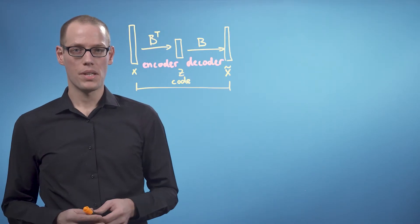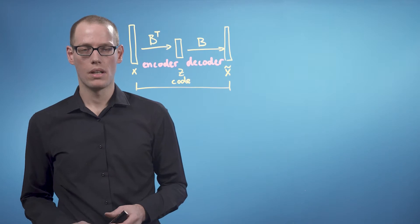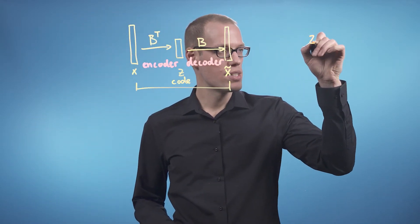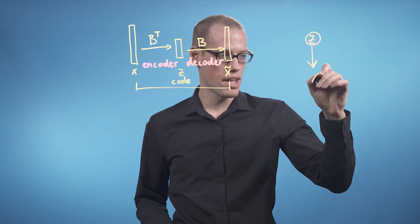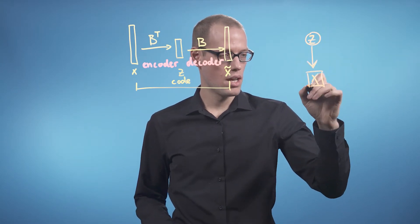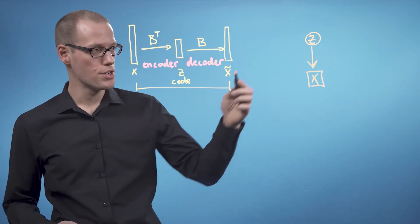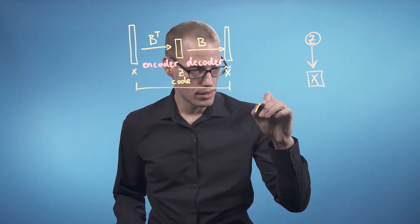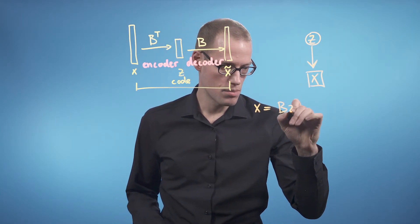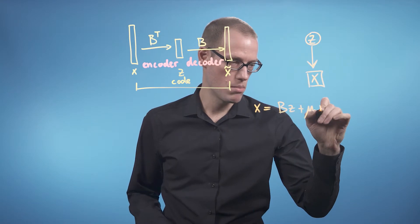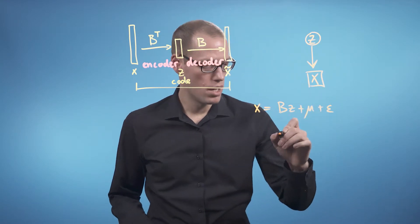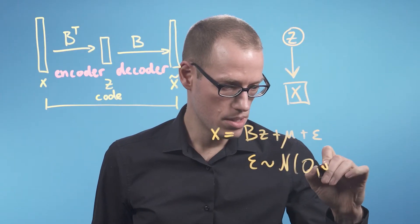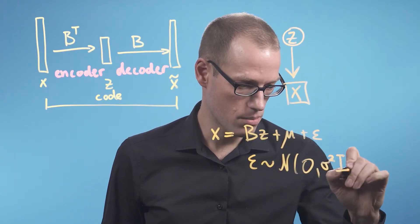We can also look at PCA from the perspective of a latent variable model. We assume that an unknown lower dimensional code Z generates data X, and we assume that we have a linear relationship between Z and X. So generally, we can then write that X is B times Z plus mu and maybe some noise. We assume that the noise is isotropic with mean zero and covariance matrix sigma squared times I.